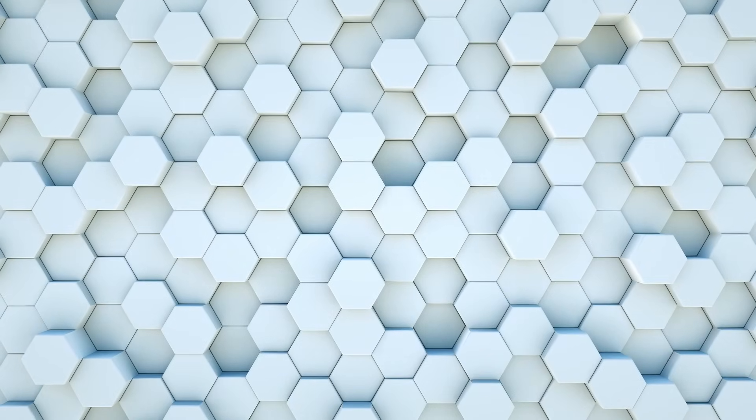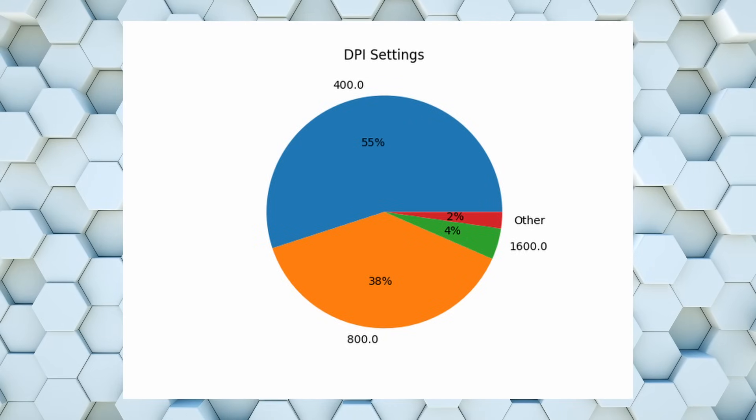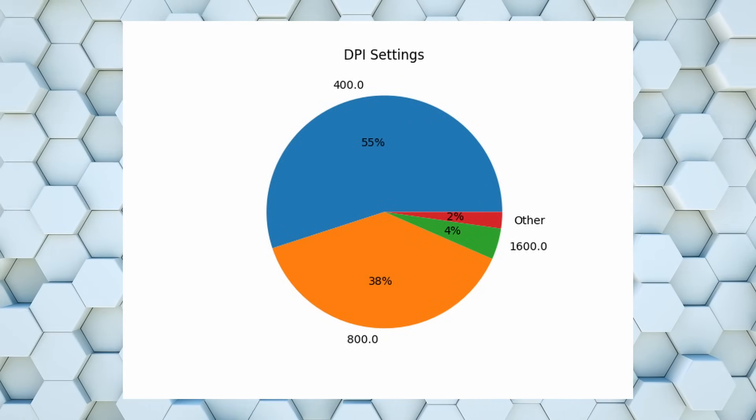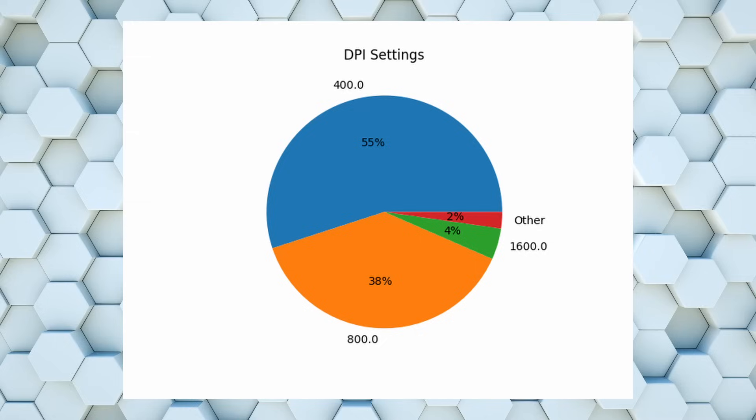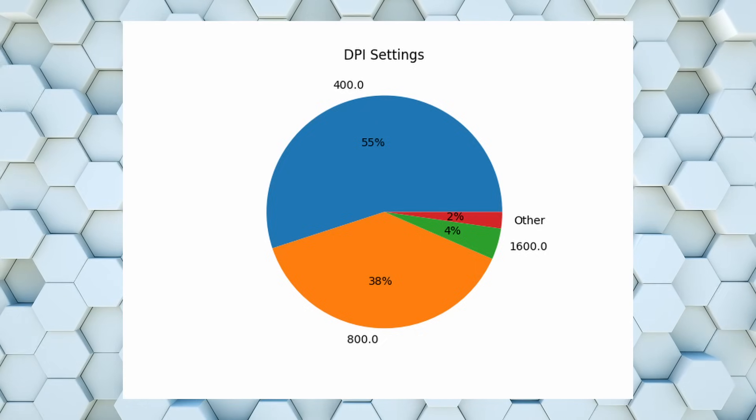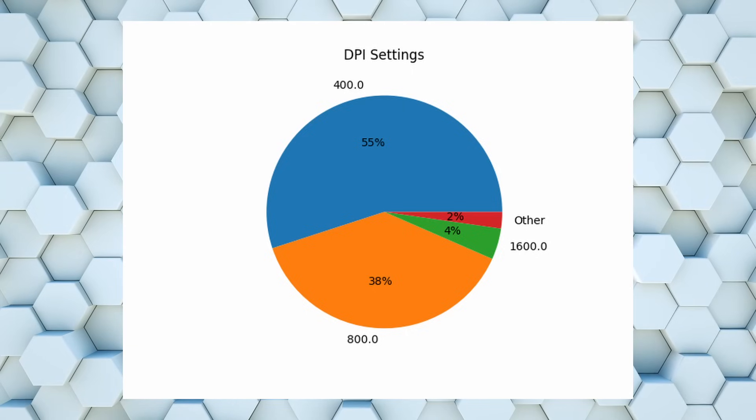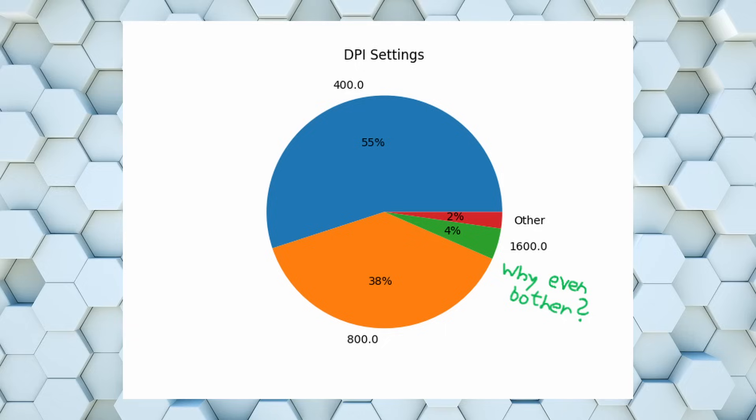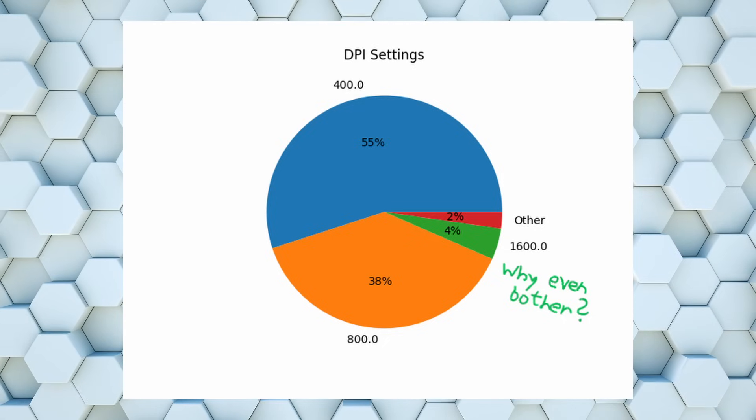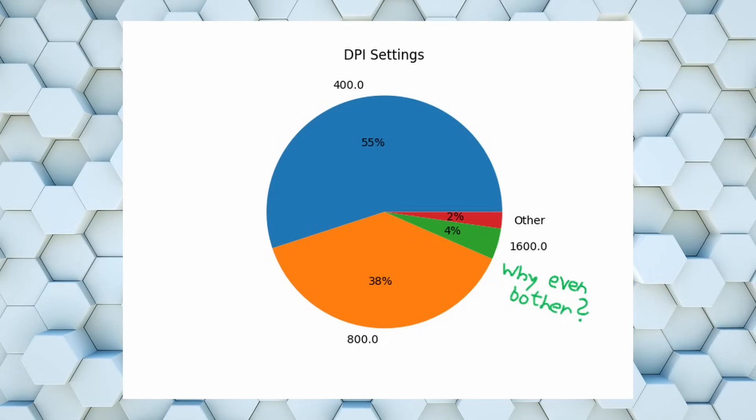And finally, even in 2025, 400 DPI is by far the most common DPI setting with around 55% of pros using it. 800 DPI is a somewhat close second with a usage of 38%. And lastly, the third most common DPI value is 1.6k, but at this point you might as well play any other non-standard DPI value.